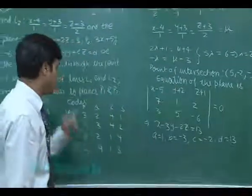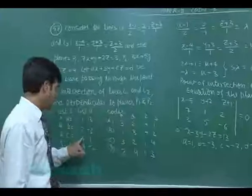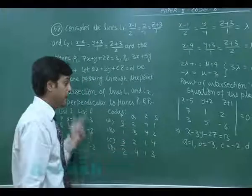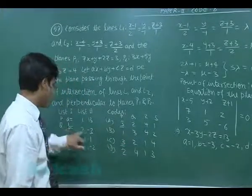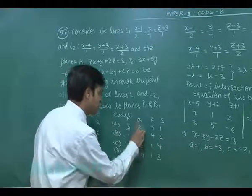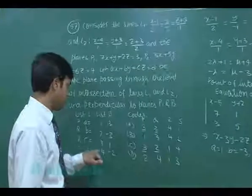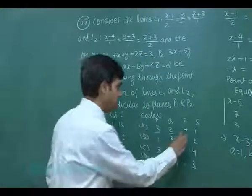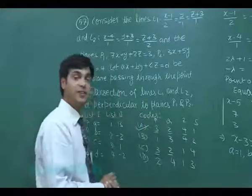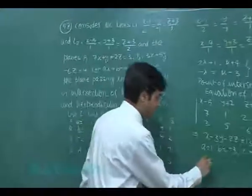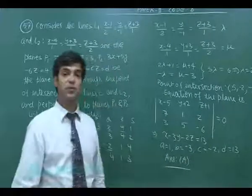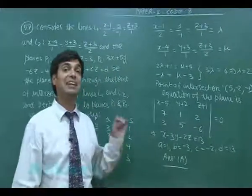From the values: a = 1, so P matches with 3; b = −3, so Q matches with 2; c = −2, so R matches with 4. The correct answer code is A. This completes questions 55, 56, and 57. Let's move to question 58.